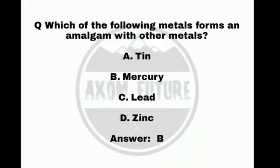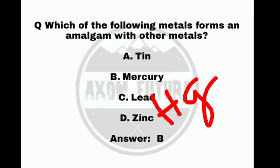Question 12: Which of the following metals forms an amalgam with other metals? The answer is B, mercury. Mercury has atomic number 80.